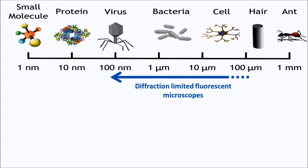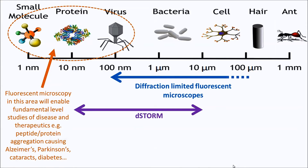Many of the applications are within the life sciences, presented as a ruler in log scale of common biological objects. We start with an ant, which is 1 mm in size, and we can view this by eye. At the other end, we have a single molecule, which is 1 nm in size — 1 nm is 1 millionth of a millimeter. The diffraction limit blurs everything below 250 nm, and as you can see from this scale, we are missing a lot of information. D-STORM can extend the limitation of the fluorescence microscope to about 20 nm, which gives us a wealth of more information, fundamental to the studies of disease and the creation of new therapeutics.